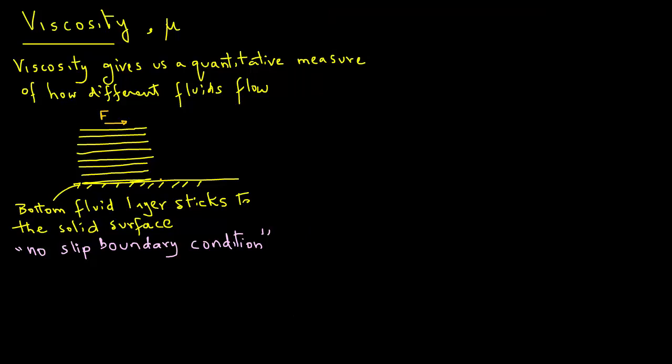If we try to draw a velocity profile, that will tell us the velocity of different layers. We know that the very bottom layer will have zero velocity because it is sticking to the wall. And then the layer above that will have a certain velocity as expressed by this arrow.